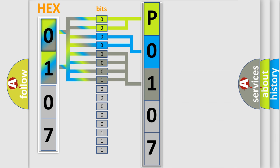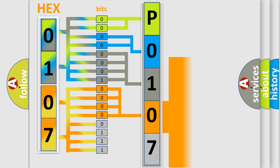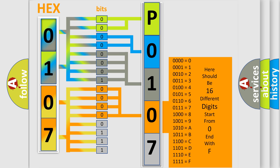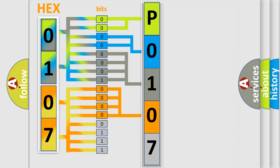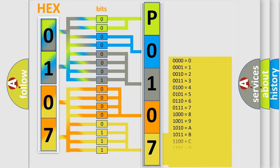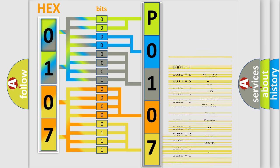The first four bits determine the fourth character of the code. The combination of the last four bits defines the fifth character. A single byte conceals 256 possible combinations. We now know in what way the diagnostic tool translates the received information into a more comprehensible format.